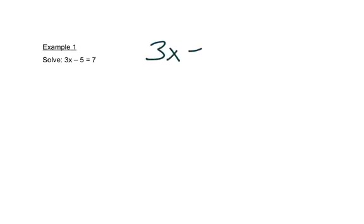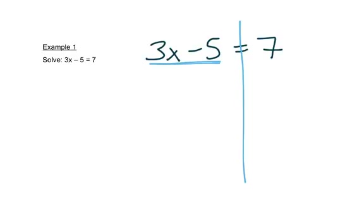So let's look at this problem. We have 3x minus 5 equals 7. We're going to draw our line down through there. Now if we look at the two sides separately, there is nothing we can do just on the left by itself — nothing we can combine, nothing to simplify. The same is true on the right; there's nothing else we can do to make that side shorter.